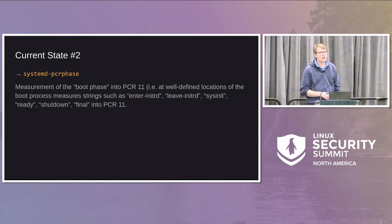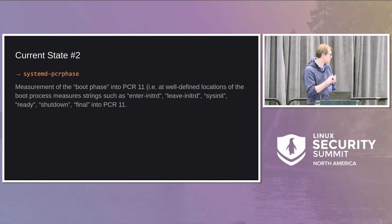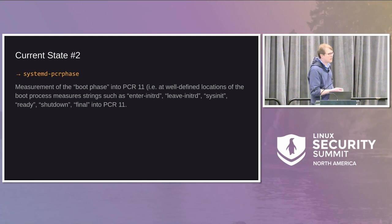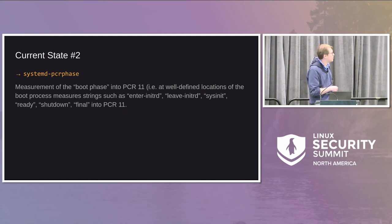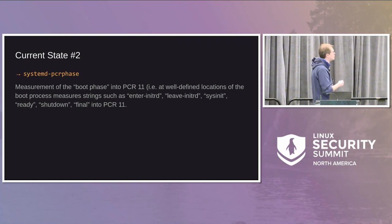Why is that useful? If you bind secrets to the value of PCR 11, or to the signature of a PCR 11 value, you can make secrets that are only unlockable in a certain part of the boot, or in multiple parts of the boot, but not any later. At the most basic level, even if you don't care so much about phases, you can say that your keys are not unlockable once the system has fully shut down.